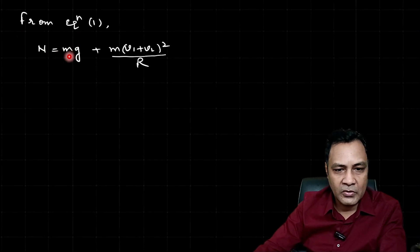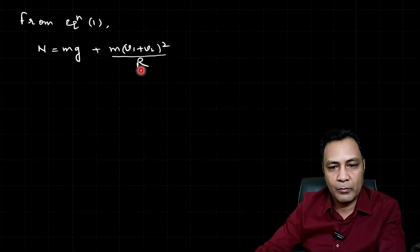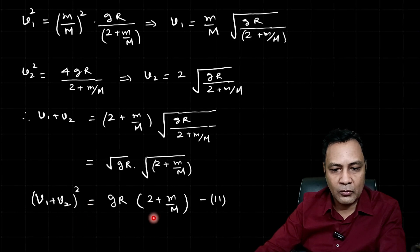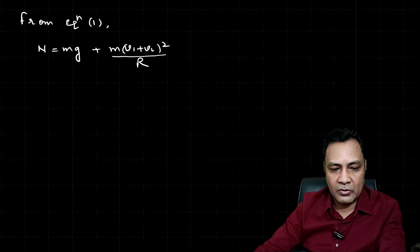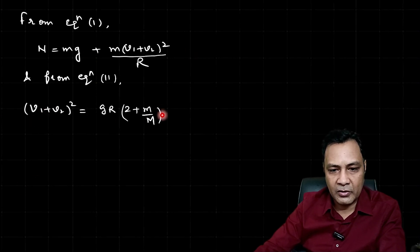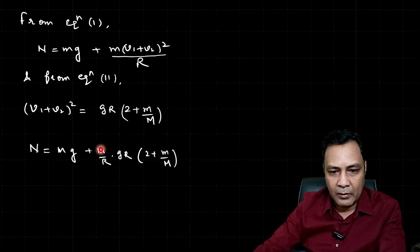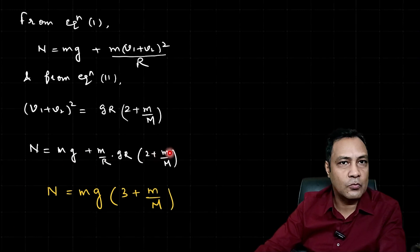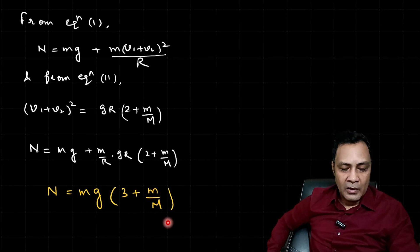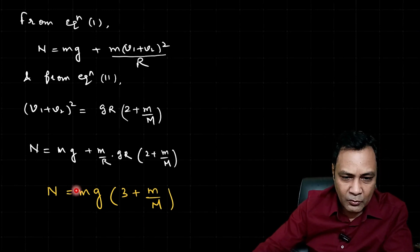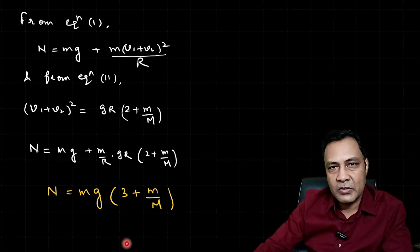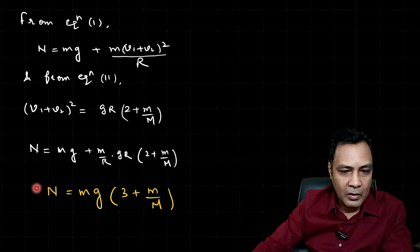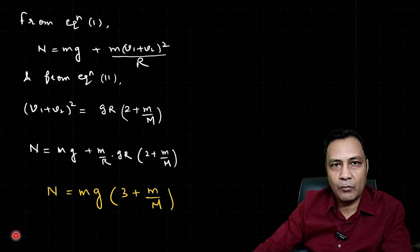From equation 1: N = mg + m(V1 + V2)²/R. Substituting equation 11 — (V1 + V2)² = gR(2 + m/M) — we get N = mg + m·gR·(2 + m/M)/R = mg + mg(2 + m/M) = mg·(1 + 2 + m/M) = mg·(3 + m/M). This can also be written as 3mg·(1 + m/(3M)). So the force of interaction between the puck and the hollow cylinder when the puck reaches the lowest point is N = mg(3 + m/M).